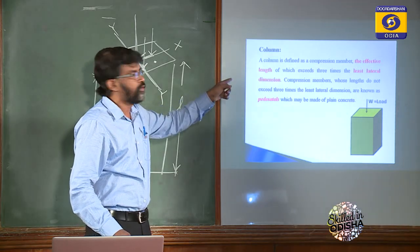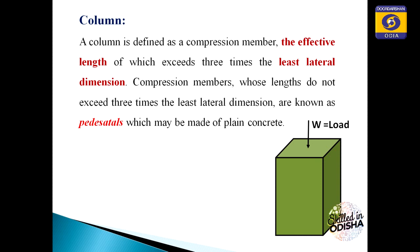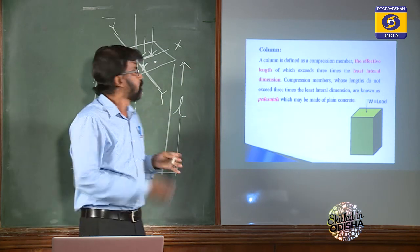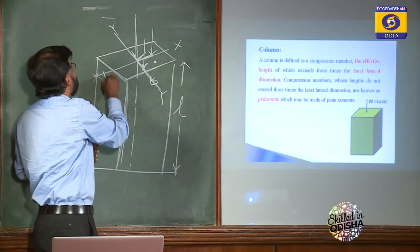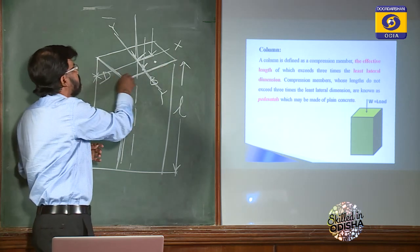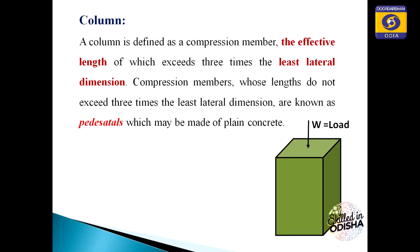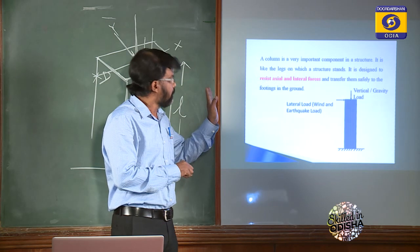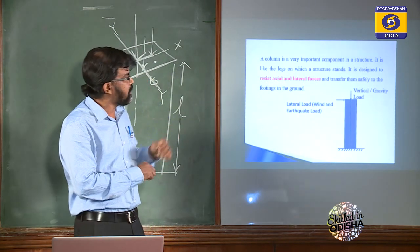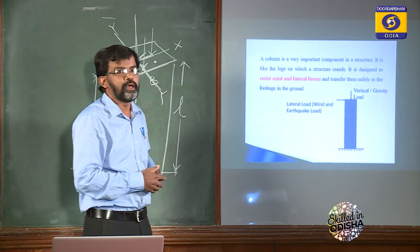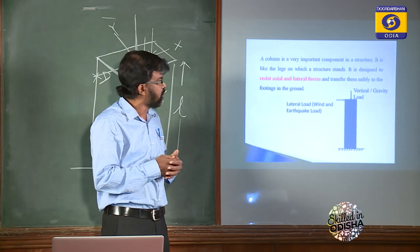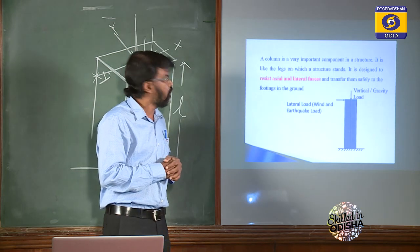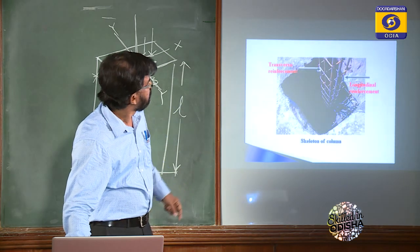If the effective length divided by the least lateral dimension — where b and d are the two cross-sectional dimensions — is more than three, it is a column; less than that, it is a pedestal. A column is normally subjected to vertical load, and sometimes lateral loads such as wind load or earthquake load, which act perpendicular to the column axis.